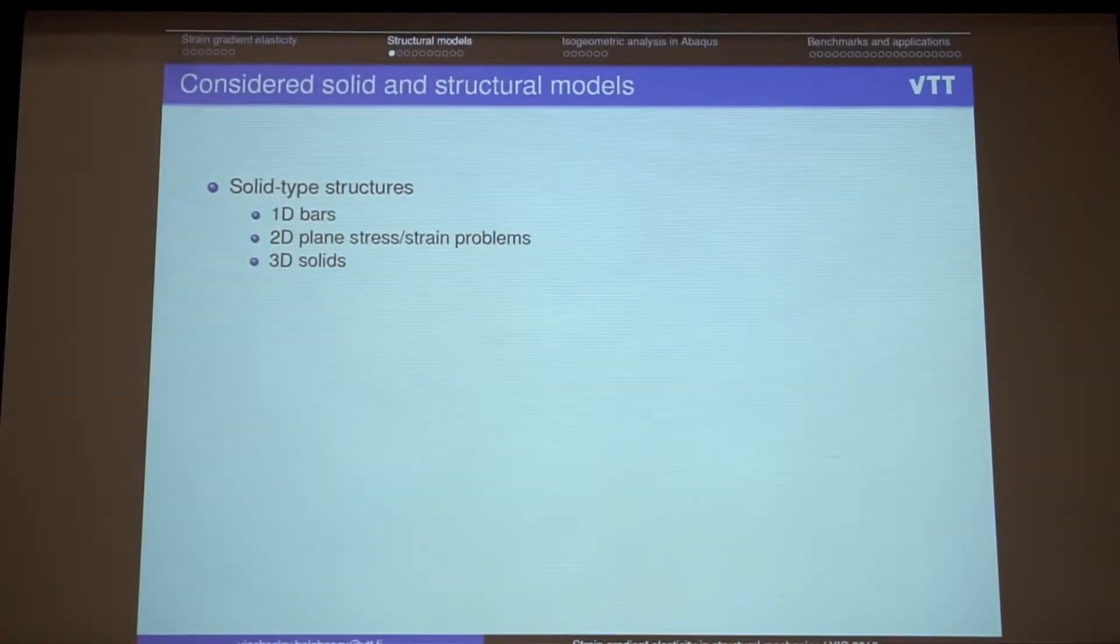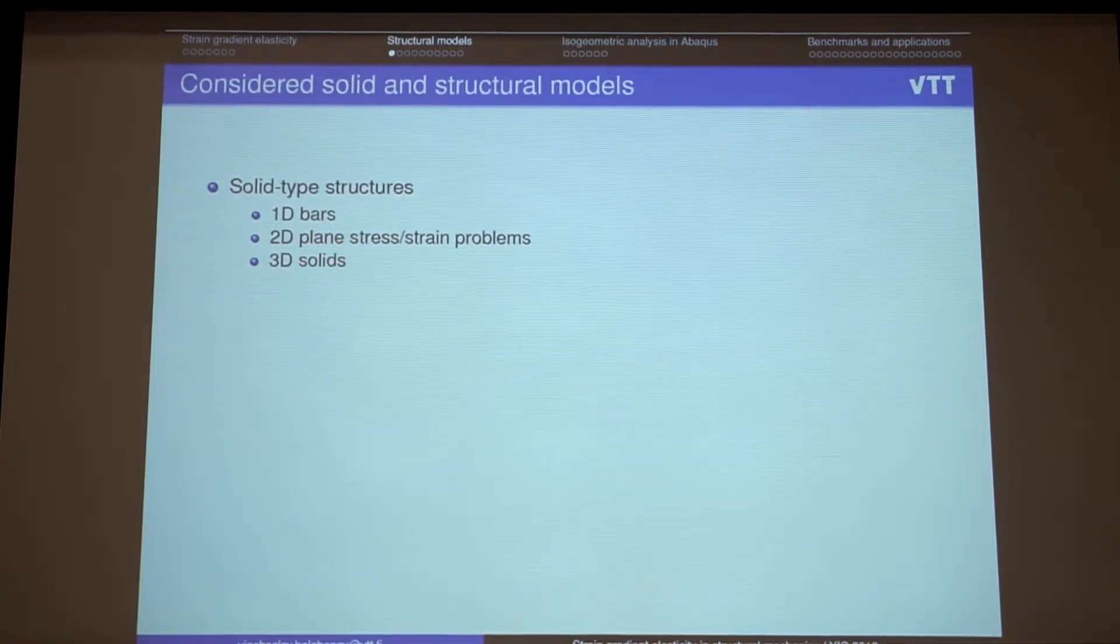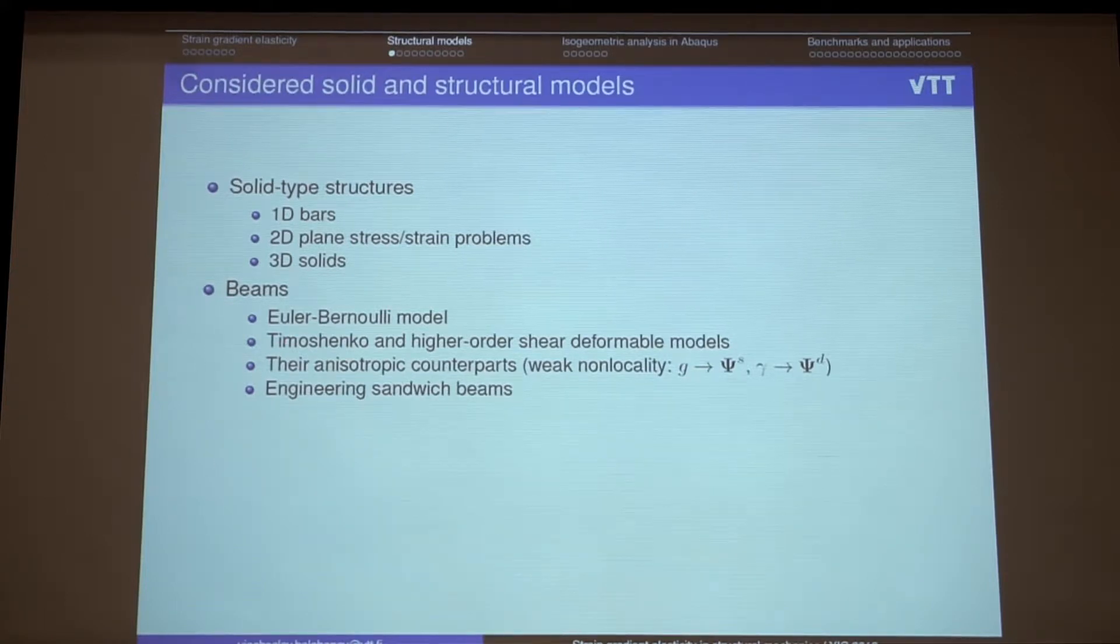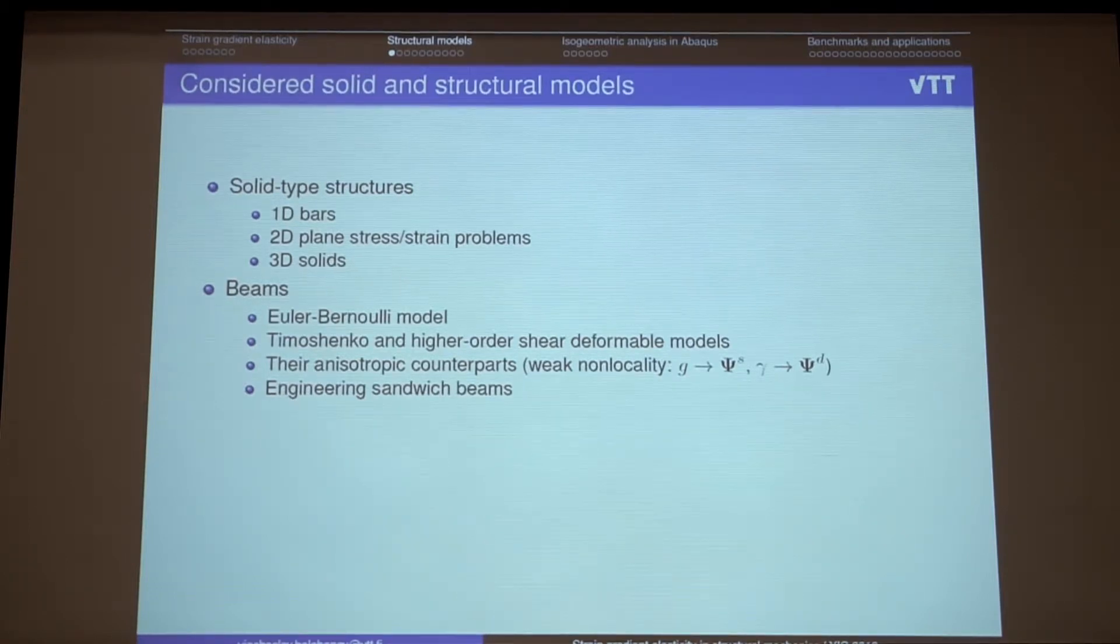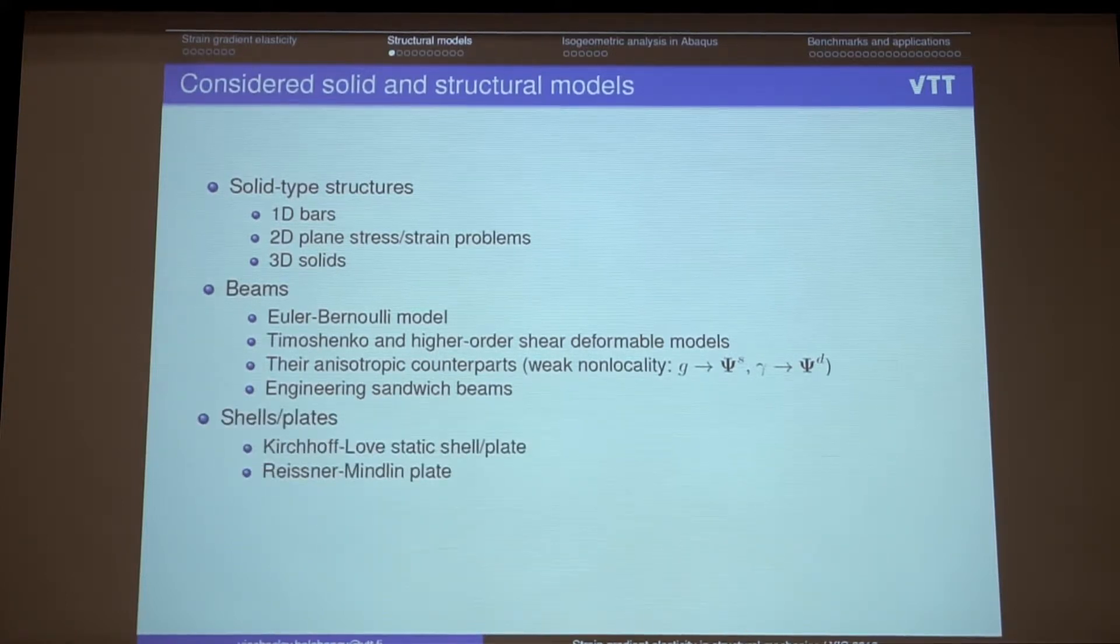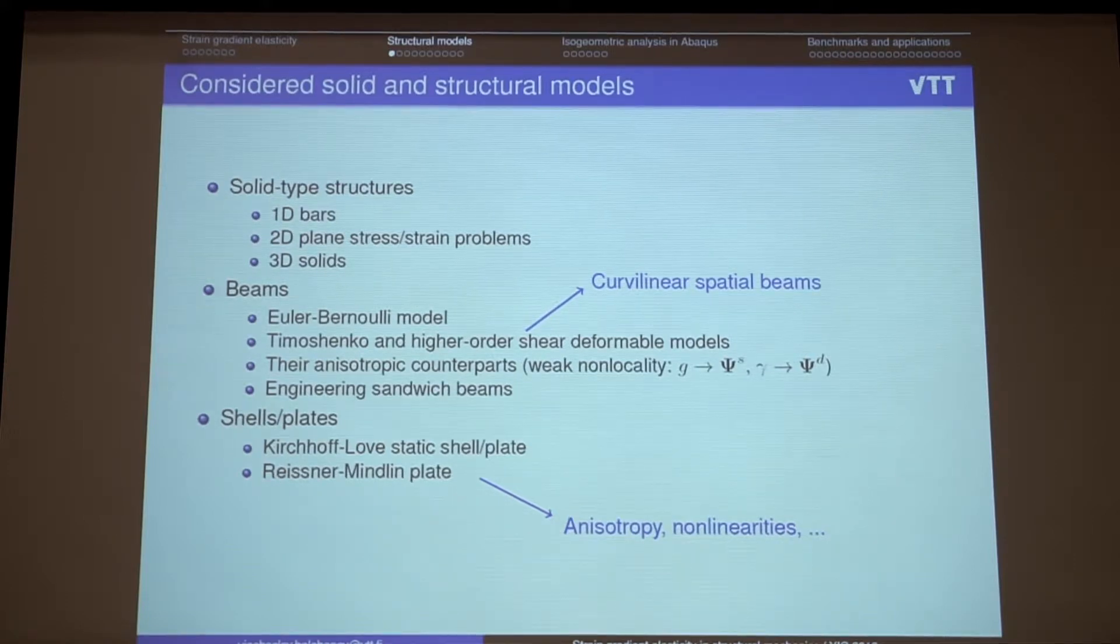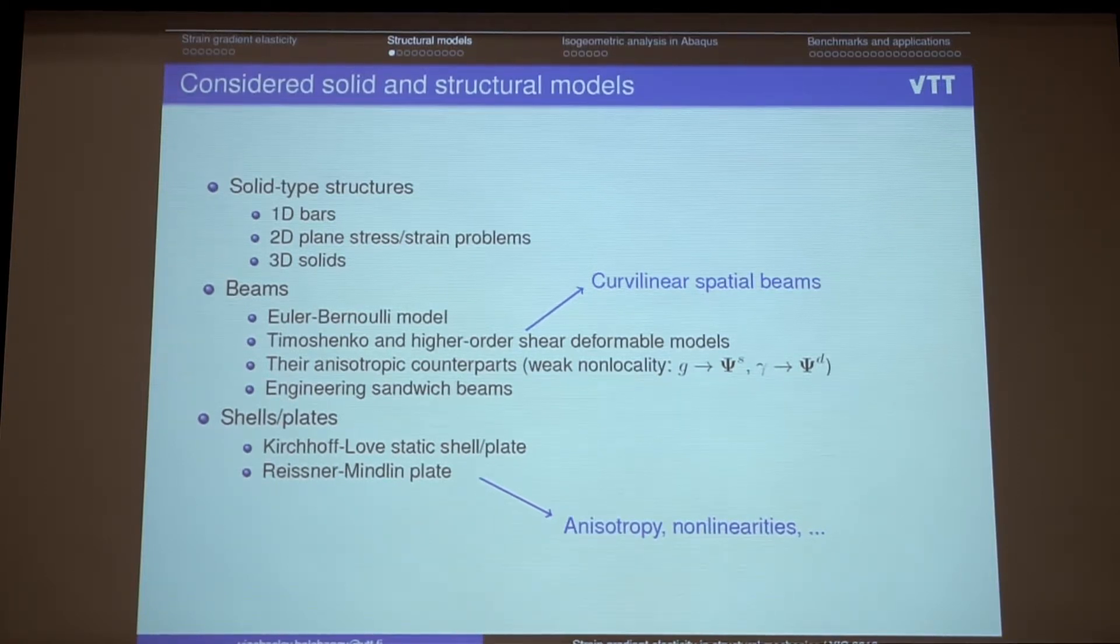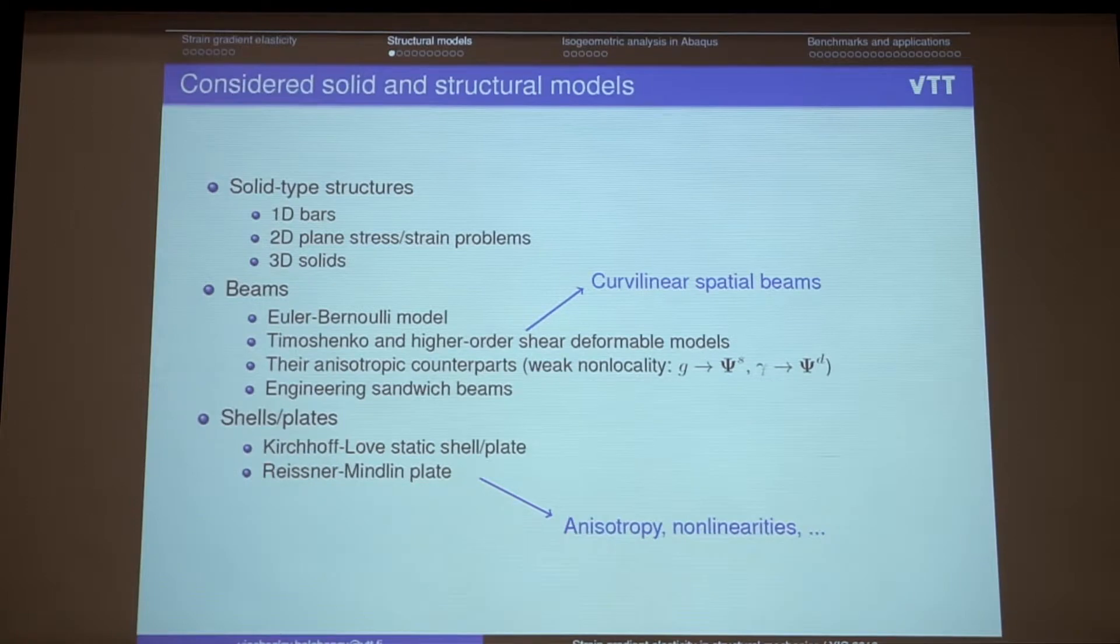So here I just briefly list all the solid and structural models I touched during my work on the thesis. All kinds of solid structures. Then beams, Euler-Bernoulli and Timoshenko beams, and even some higher-order shear deformable or third-order shear deformable beam models. There are anisotropic counterparts and also with some applications to the engineering sandwich beams. And of course shells and plates models. Maybe the most missing models which were not considered are curvilinear spatial beams and some anisotropic models for shells. Because they have a lot of applications and the models still missing.